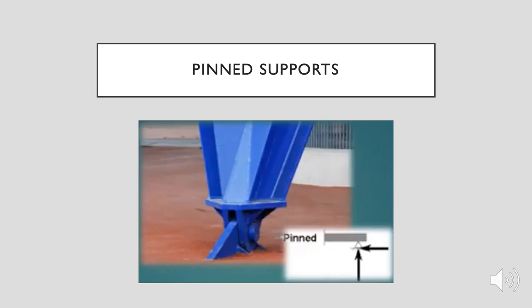Pin supports: a pin connection resists forces vertically and horizontally; however, it is subject to moment. This enables structural members to pivot but will stop movement in other directions. Pin connections can also resist small amounts of moment as long as the moment is less than the limit of the connection or support. Pin supports are commonly utilised at the base for joining columns and sections, as these members are fundamental pieces of a structure and should limit directional loads.